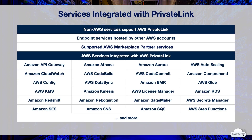You can use PrivateLink with endpoint services, supported services in AWS Marketplace, and AWS services that are integrated with PrivateLink. The endpoint service is also called a PrivateLink-powered service. Endpoint services are services hosted by other AWS accounts. You can create your own application in your VPC and configure it as an endpoint service. Other AWS principals can create a connection from their VPC to your application using an interface VPC endpoint. Supported services include API Gateway, Auto Scaling, CloudWatch, Amazon EMR, AWS Glue, Amazon Kinesis, SageMaker, Amazon RDS, AWS KMS, Amazon SQS, and more.